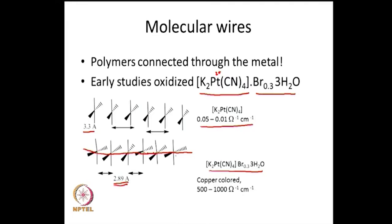Removal of an electron from the d_z² axis and formation of a platinum-platinum bond along this axis leads to a molecular conductor. Because this is a partial oxidation — only a half-filled orbital — this gives exactly the features of a conducting material. The result is a copper-colored metallic compound with reasonably high conductivity. The conduction is extremely high along this axis, and the conductivity is also anisotropic — a clear indication of delocalization of electrons on the platinum along one particular axis.